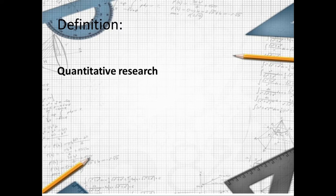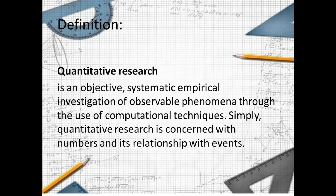Quantitative research is an objective, systematic, empirical investigation of observable phenomena through the use of computational techniques. Simply put, quantitative research is concerned with numbers and their relationship with events. We can attain our objectives through analysis using numbers.